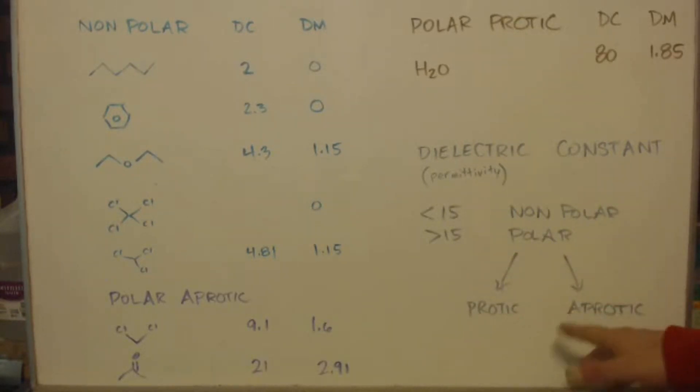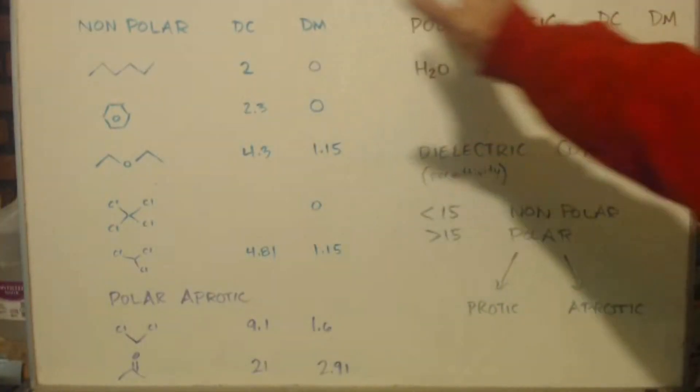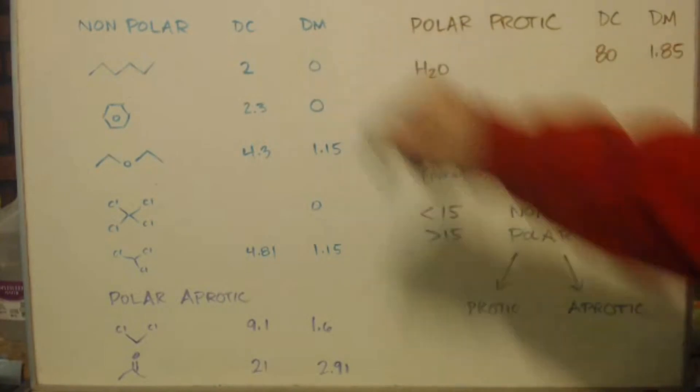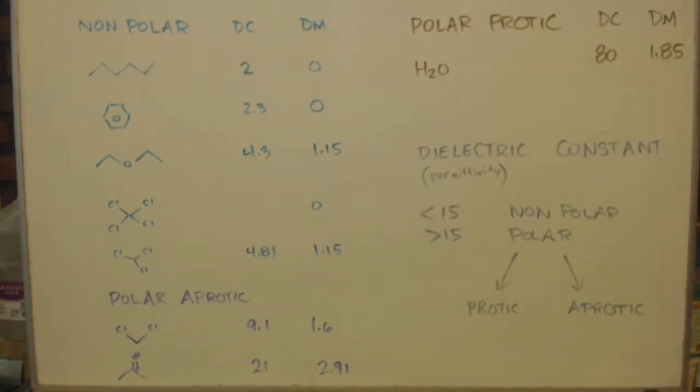Then you've got your protic and aprotic polar solvents. If you have protons like hydrochloric acid or water, that's protic. If you don't have any protons like acetone or dichloromethane, then it's aprotic. But it's still polar. This just tells whether you have protons in the solution. I have DC, even though that does not stand for dielectric constant. In this case, it does. DM stands for the dipole moment, which is another indicator of whether you have a non-polar or polar solvent.